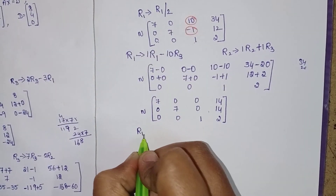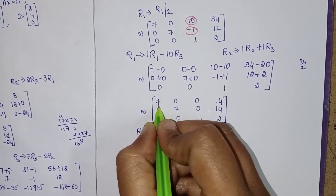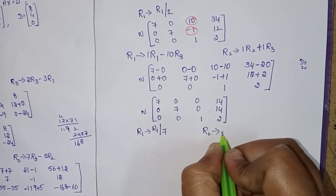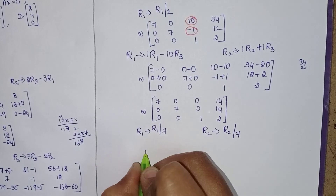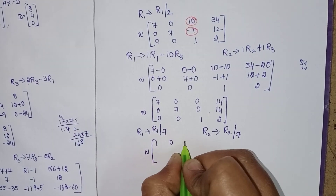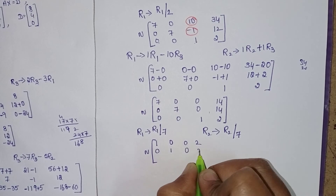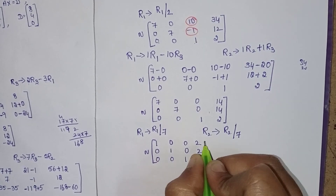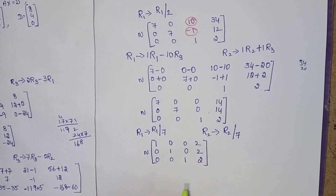Divide R1 by 7 and R2 by 7. This gives the identity-form matrix: row 1 is 1, 0, 0, 2; row 2 is 0, 1, 0, 2; row 3 is 0, 0, 1, 2.